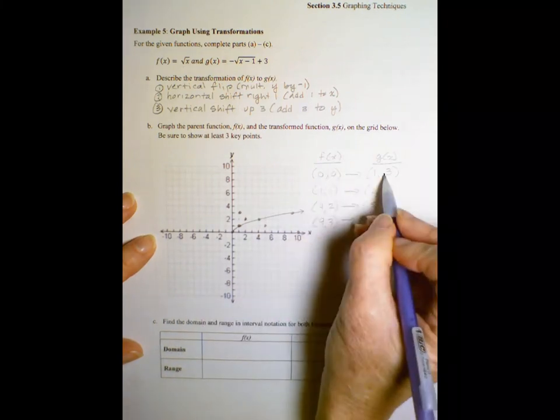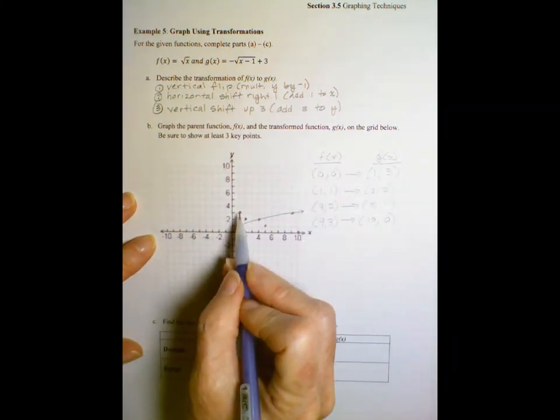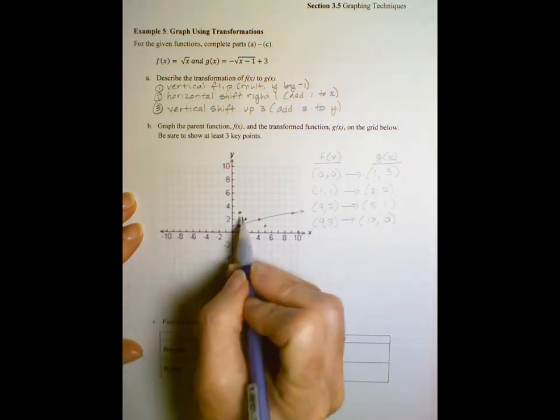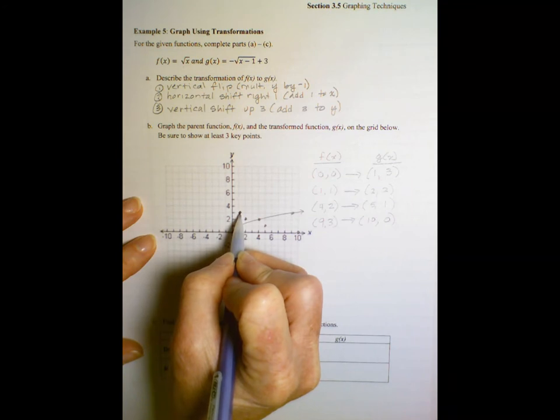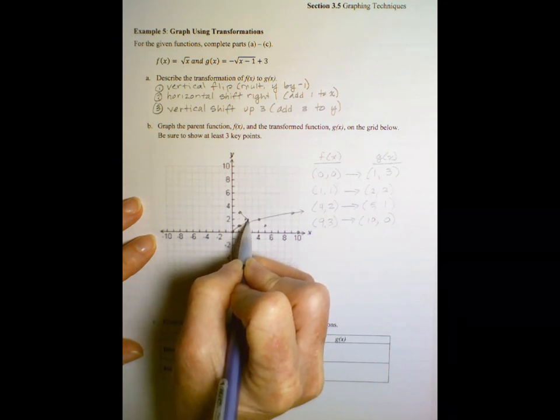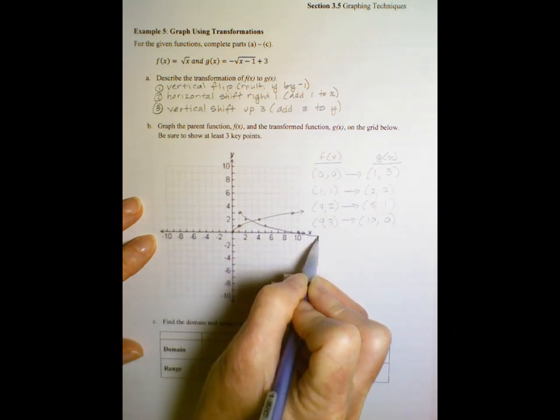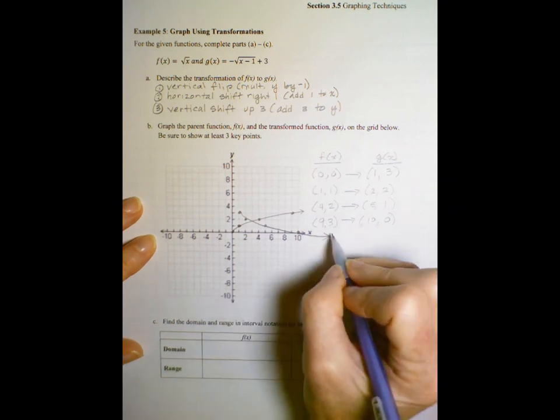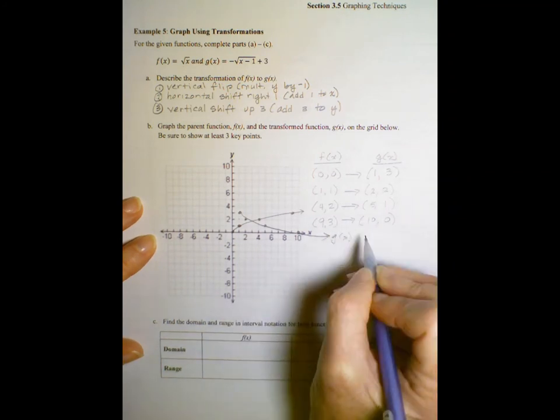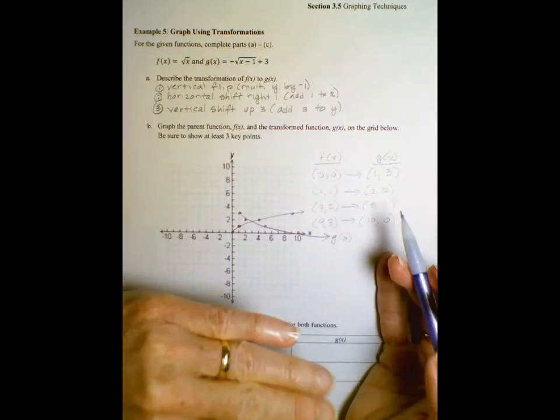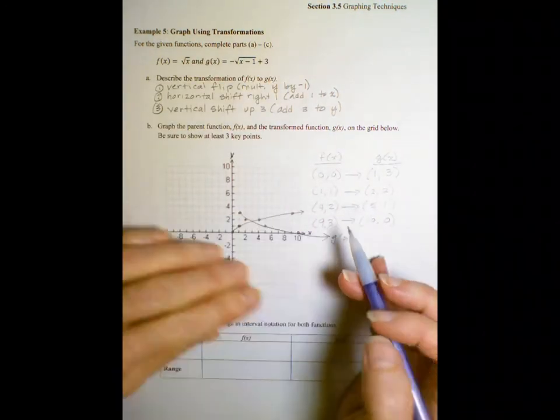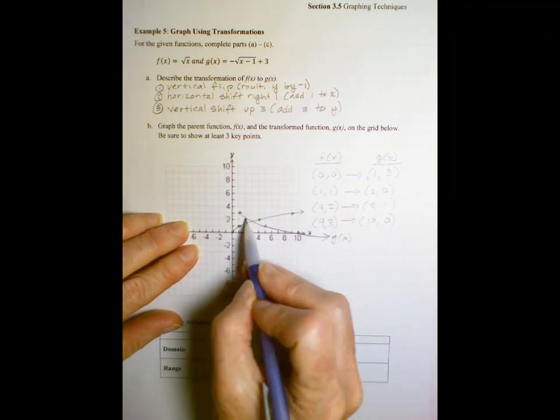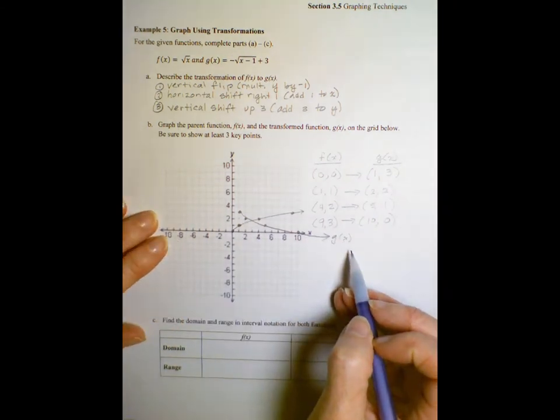Now remember, zero, zero is now one, three. And there is nothing, there was nothing to the left of that point. Again, here, there is nothing to the left of that point. We start here, and we have something like that for our g of x. We expected it to flip vertically, flip over, and then it shifted up, and it shifted right. And that's how we ended up with this sort of upside down looking thing.